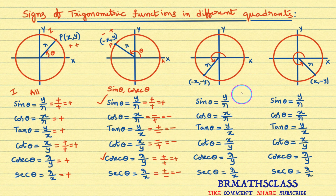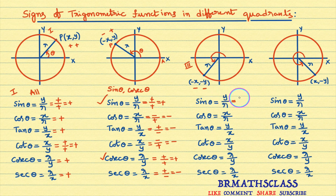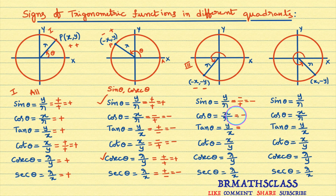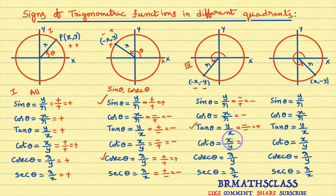Now come to the third quadrant. In the third quadrant, x coordinate is negative and y coordinate is also negative. Sin theta is y by r — y is negative, r is positive — negative divided by positive is negative. Cos theta is x by r — x is negative, r is positive — negative. Tan theta is y by x — y is negative divided by x which is negative — negative divided by negative is positive. Cot theta is x by y — x negative divided by y negative — also positive. So tan and cot are positive in the third quadrant.